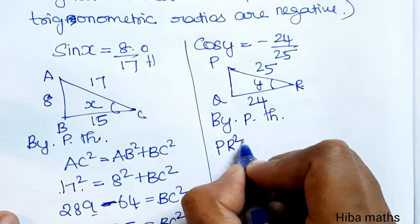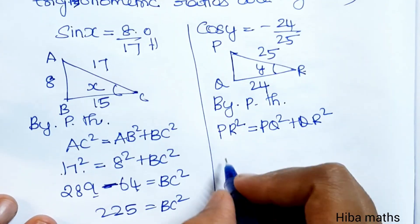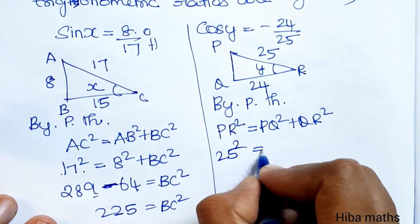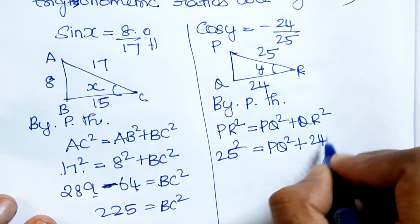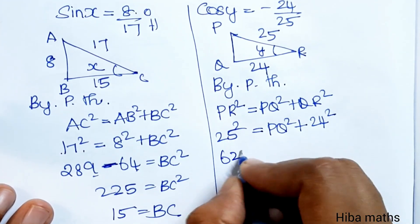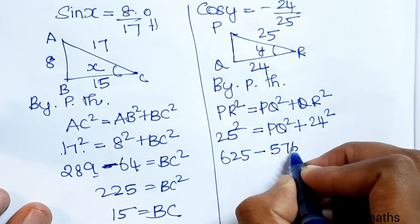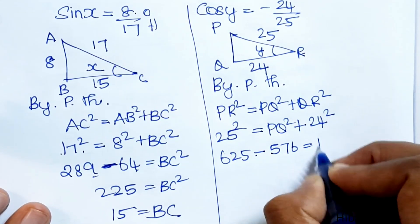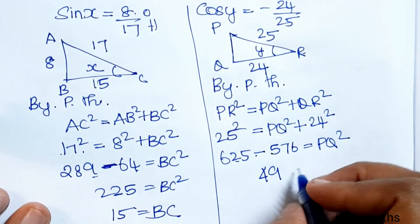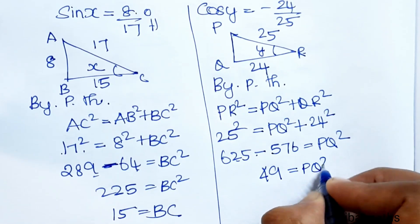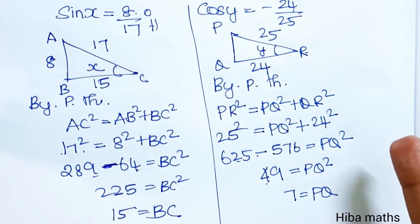For cos y equals minus 24 by 25, using Pythagoras theorem: PR squared equals PQ squared plus QR squared. So 25 squared equals 24 squared plus BC squared. 625 minus 576 equals BC squared, giving 49 equals BC squared. So BC equals 7.